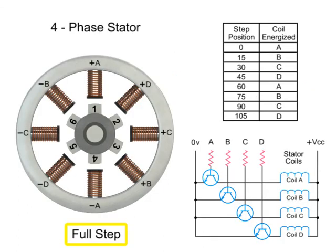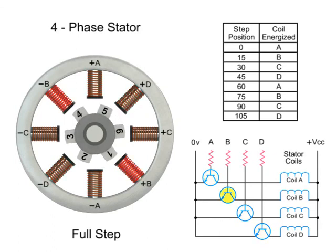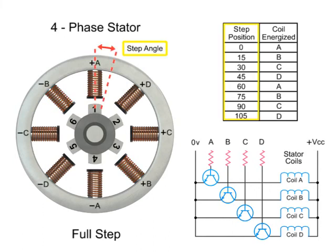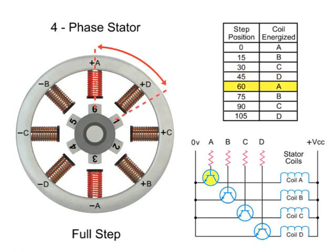For full-step mode operation, energizing each set of coils sequentially, the rotor can be made to rotate or step from one position to the next by an angle determined by its step angle. Shaft rotation is achieved by energizing both windings while reversing the current alternately, switching coils A, B, C, D one coil at a time repetitively, which will rotate the rotor in the forward direction.